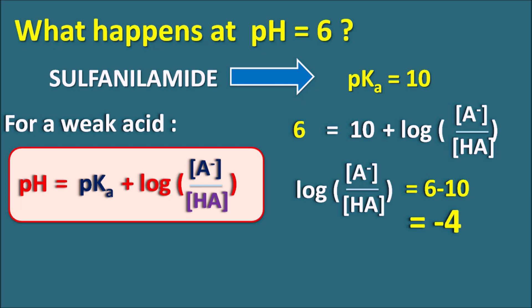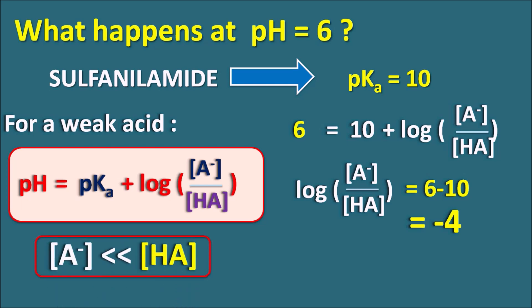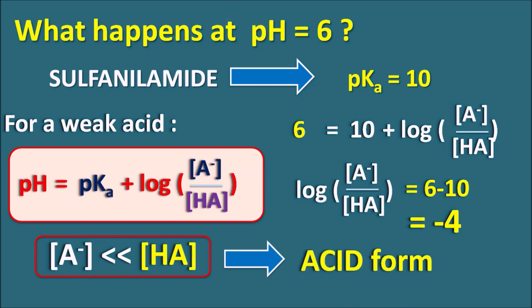This indicates the concentration of A⁻ (salt form) is extremely small compared to HA (acid form). At pH 6, sulfonamide mainly exists in the unionized acid form. Since unionized forms are less soluble in water, sulfonamide has very poor aqueous solubility at pH 6.